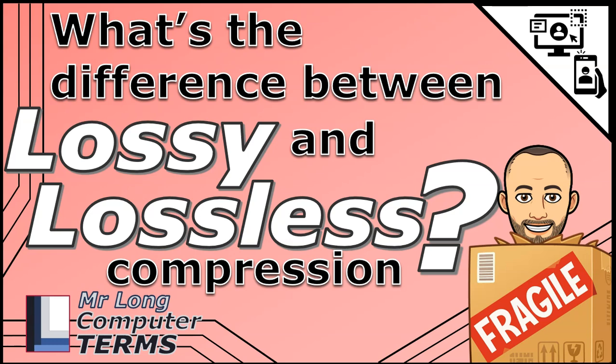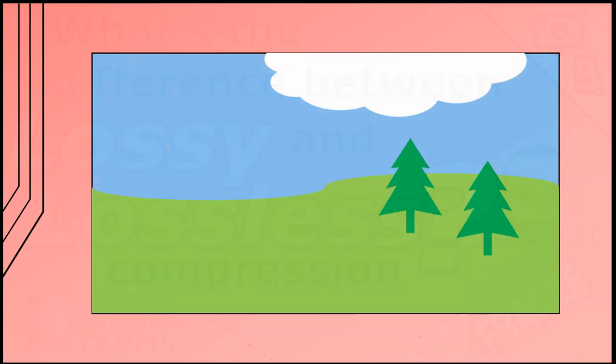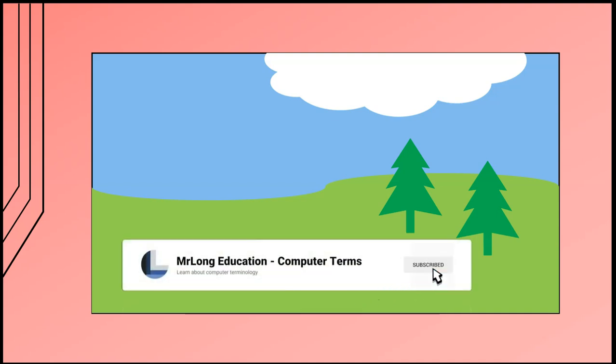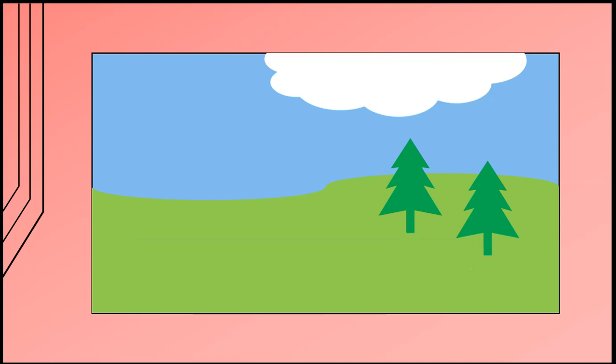What's the difference between lossy and lossless compression? Let's take a picture. Pictures are made up of thousands or millions of tiny little blocks called pixels. Each pixel is its own color, and a picture is basically all these little pixel dots of color in a specific order to create the image. Now let's take the very first pixel of this picture here in the top left-hand corner.